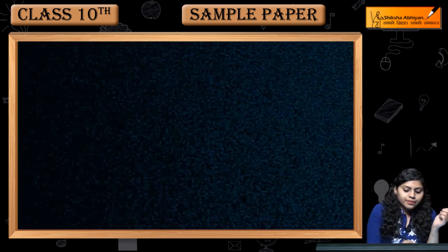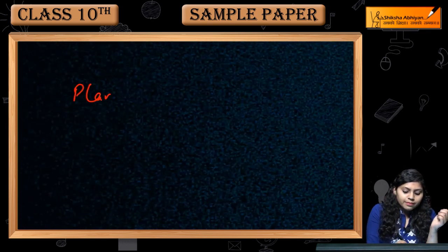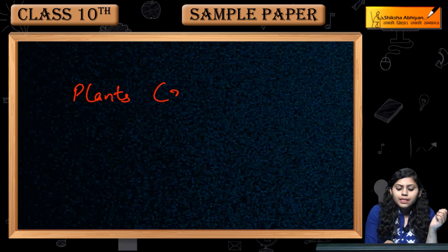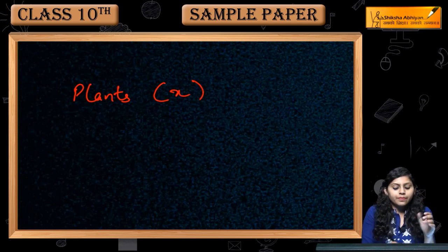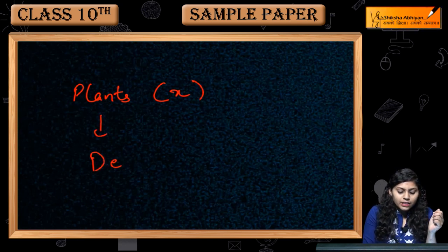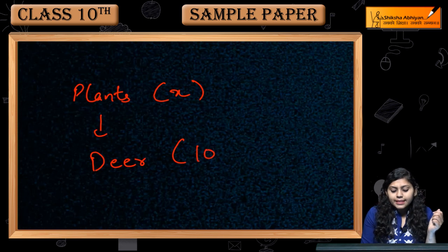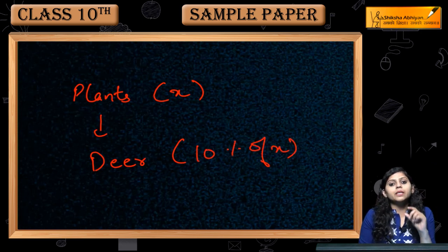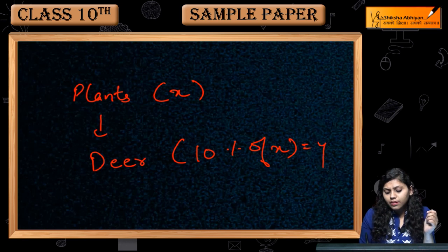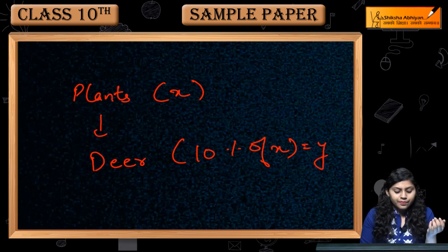For example, plants. Plants have energy X. Deer have been given 10% of X. Now 10% of X will be given, equals Y.